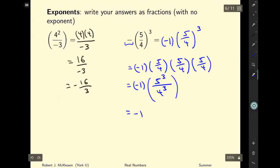What's the answer going to be? It's negative 1 or negative 5 times 5 is 25 times 5 is 125. 4 times 4 is 16 times 4 that's 64. And you know I basically have negative 125 over 64.